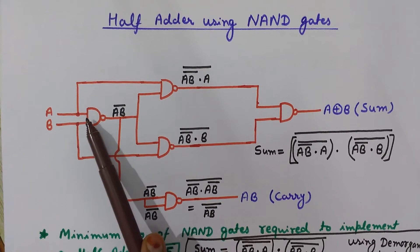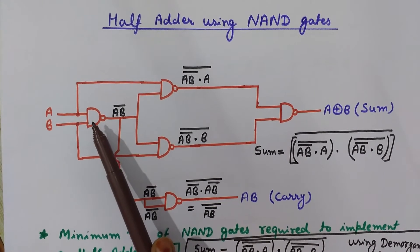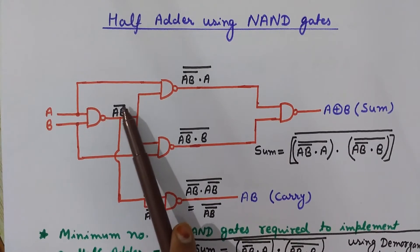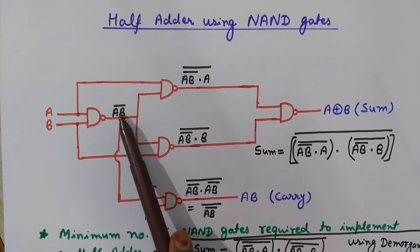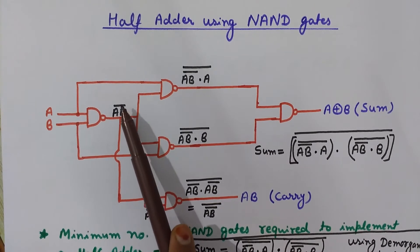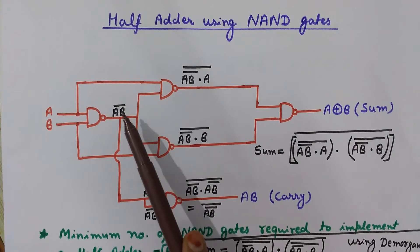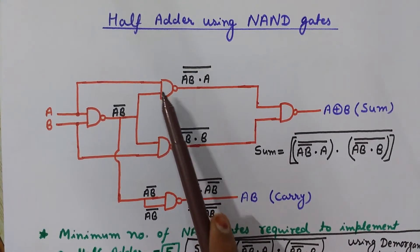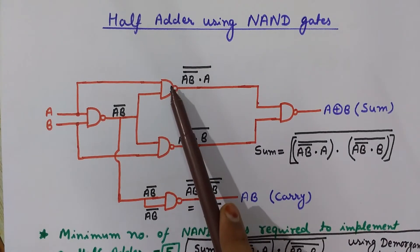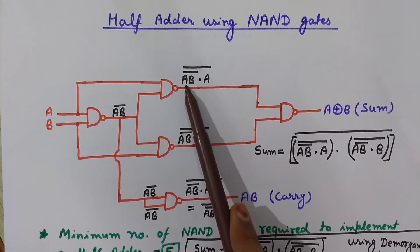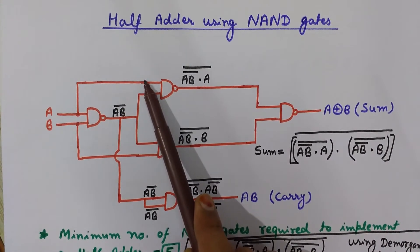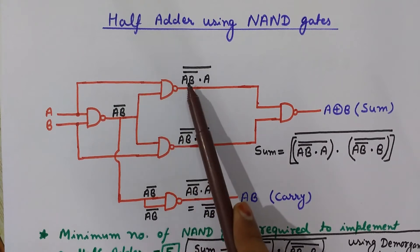The two inputs go into a two-input NAND gate. Since NAND means NOT-AND, the output of this first NAND gate is A·B̄ — that is, the complement of A AND B. This output then goes into one input of the next NAND gate, and another input of that NAND gate also receives it, along with input A.